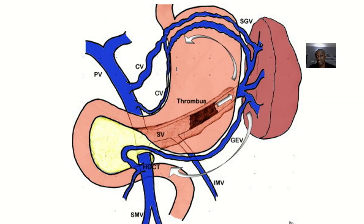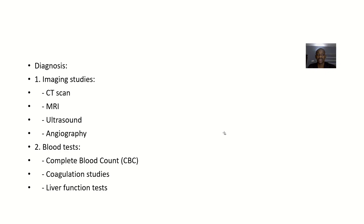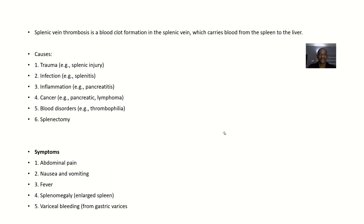There is a thrombosis of the splenic vein — you can see there's a thrombus in the splenic vein. So we are asking: if there is a thrombus in the splenic vein, what are the symptoms, how will it present, what will be the effect on the patient? Splenic vein thrombosis is a blood clot formation in the splenic vein, which drains blood from the spleen to the liver.